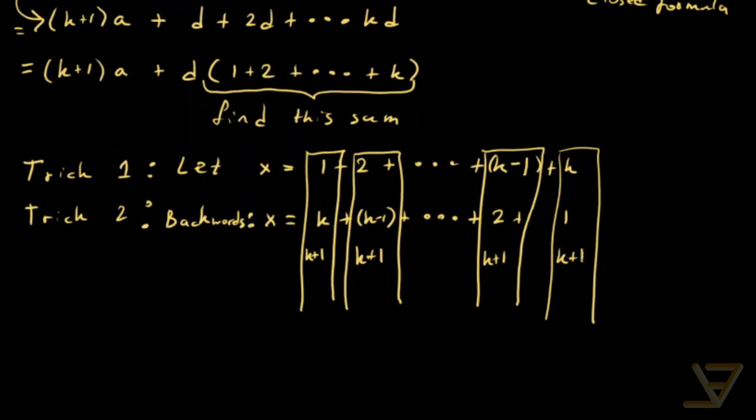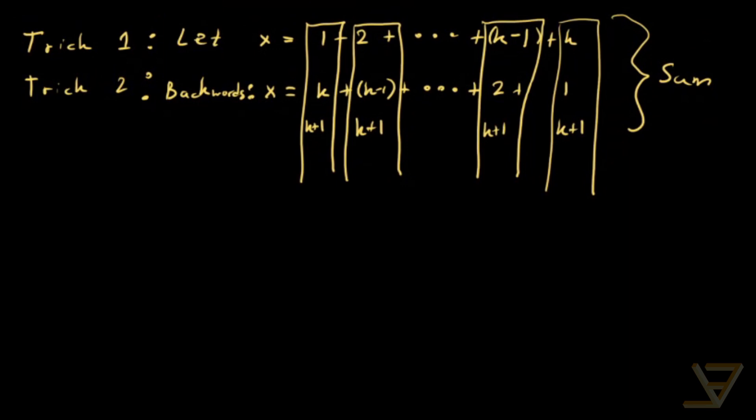So what can we do with this? Well we can take the sum of these two equations. So what we get is 2X equals K plus 1 times K plus 1 times the number of terms, which is K. And that tells us that X is equal to K times K plus 1 over 2. So we found that this is equal to 1 plus 2 all the way through to K.